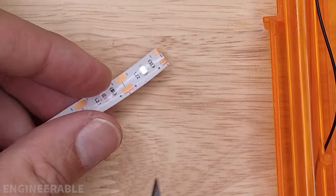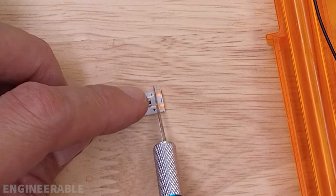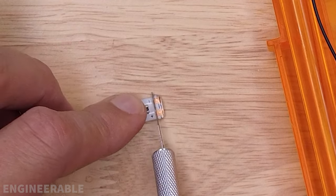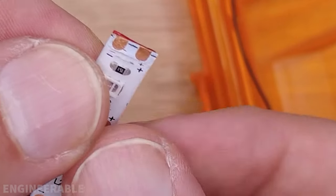These LED strips have a silicone coating, so we need to cut that back and scrape it off to get to these contacts under here. See the contacts under the silicone?